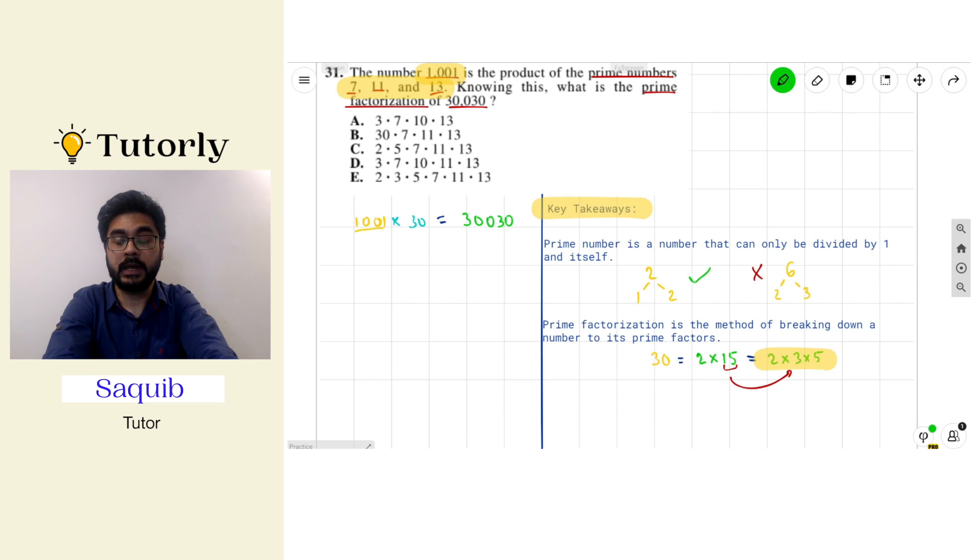So I can go ahead and rewrite this product as 7 times 11 times 13, and I can break down 30 as, say, 3 times 10. But 10, again, is not a prime number, and I can break 10 down to smaller factors. So let's rewrite the product as 7 times 11 times 13 times 3, and I can break down 10 as 2 times 5.